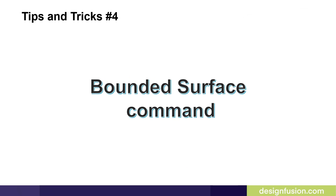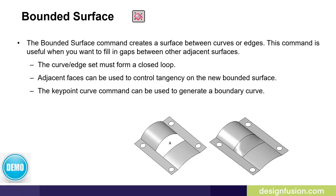Number four and the last tip for this part is the Bounded Surface command. It creates a surface between curves or edges and is useful when you want to fill in gaps between adjacent surfaces. The curve or edge set must form a closed loop, though there is an option to have it closed automatically. Adjacent faces can control the tendency on a new bounded surface, and the Keypoint Curve command can be used to generate a boundary curve. This is one of the most useful surfacing commands, especially when dealing with foreign CAD data that needs to be patched.